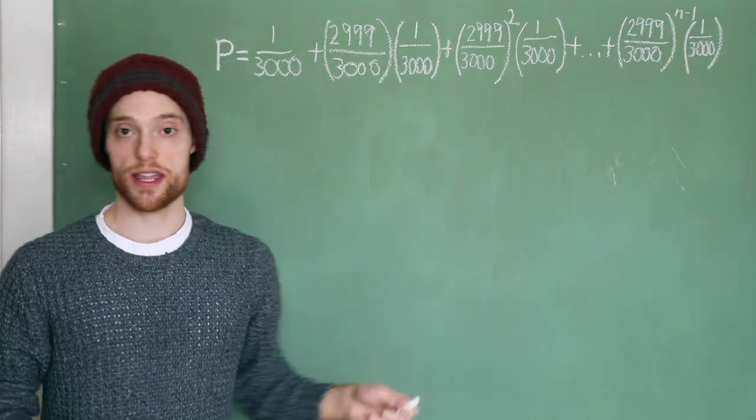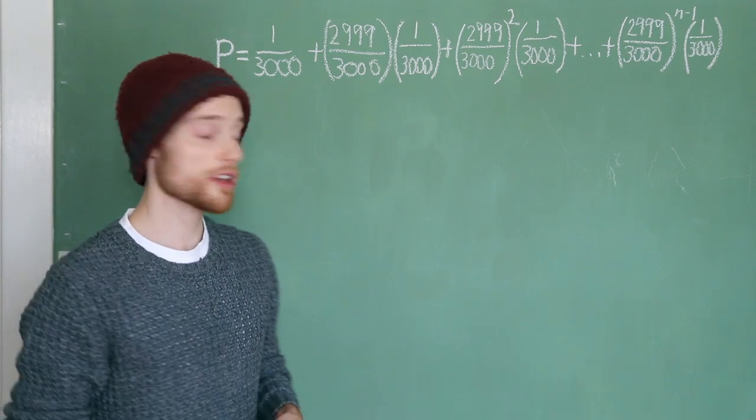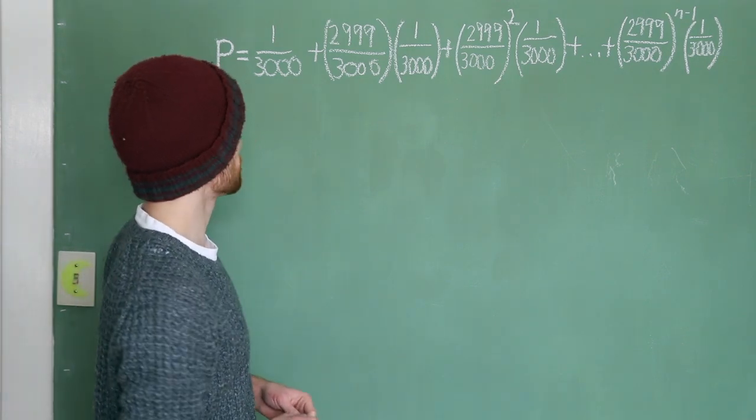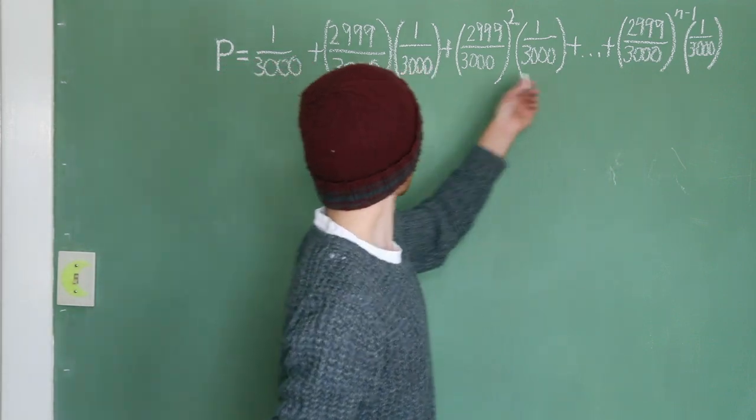This is the series we'll be dealing with. It doesn't look very nice right now, but we can keep going. So, right off the bat, I'm just going to multiply both sides by 3,000, because we have that in the denominator in every single term.